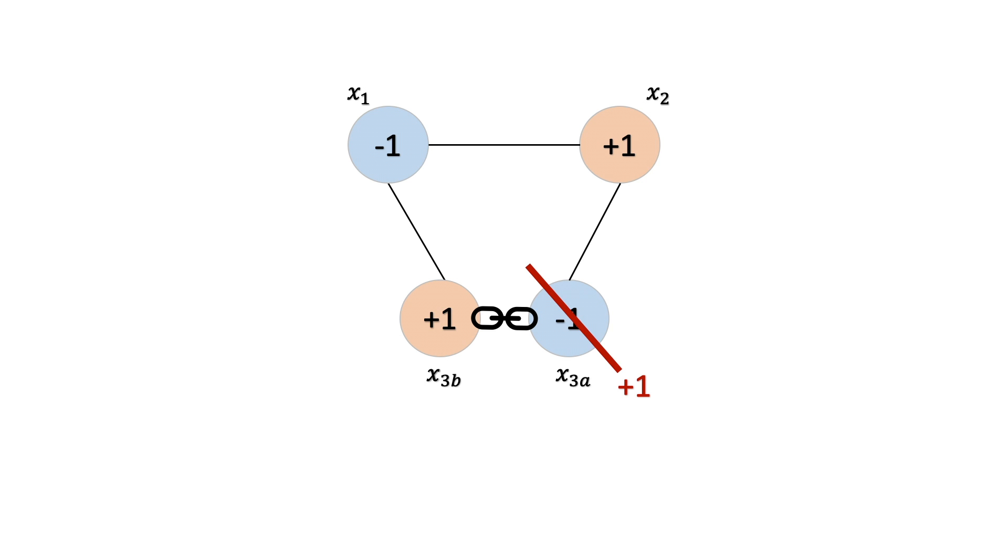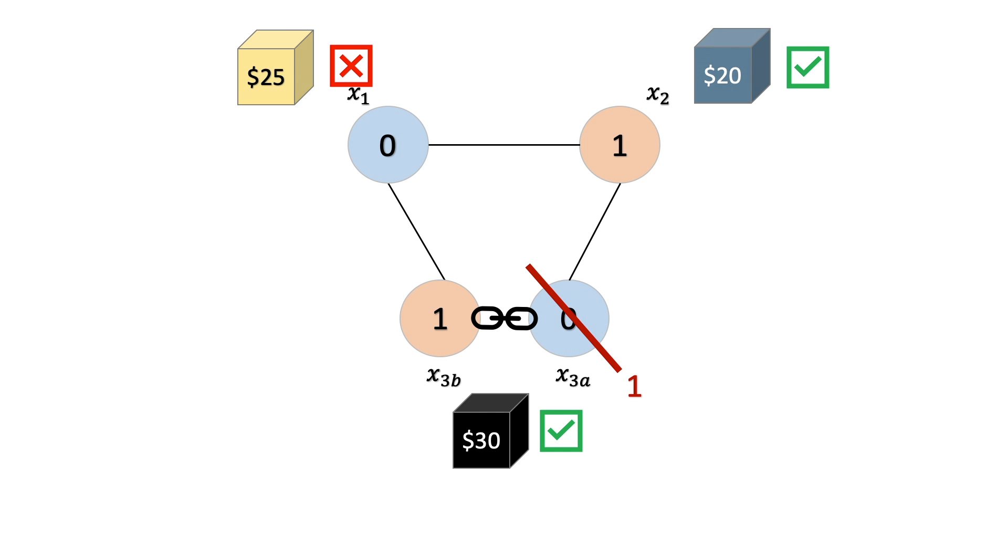At this point, our solutions are translated back into the 0, 1 variables that belong to the QUBO model we originally submitted. This means that each negative 1 is replaced with 0, and each positive 1 remains the same. This is now the solution that's returned to the user. Variable 1 has value 0, variable 2 has value 1, and variable 3 has value 1. When we translate this back to our original problem about which boxes to purchase, this corresponds to the solution where we should buy the boxes that cost $20 and $30, and not the box that costs $25.